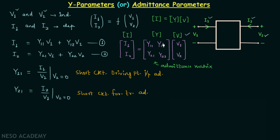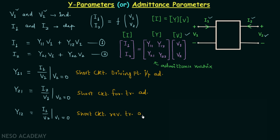For parameter Y12, from equation 1 with V1 equal to 0, Y12 equals I1 divided by V2 when V1 equals 0. Since V1 equals 0, the input port is short-circuited. We again have current divided by voltage giving admittance, and since we have a parameter of the input divided by a parameter of the output, this is the short-circuit reverse transfer admittance.